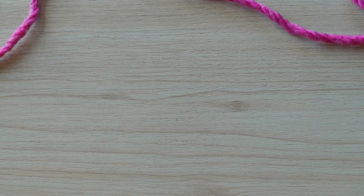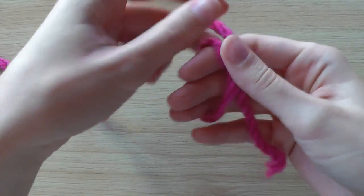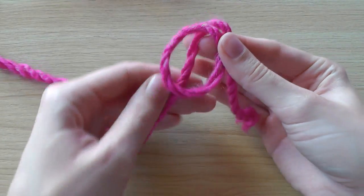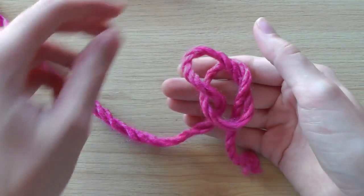To cast on stitches we should start with the usual slipknot. For this, create a circle, put the long string under the circle and pull the yarn through. You get the loop.